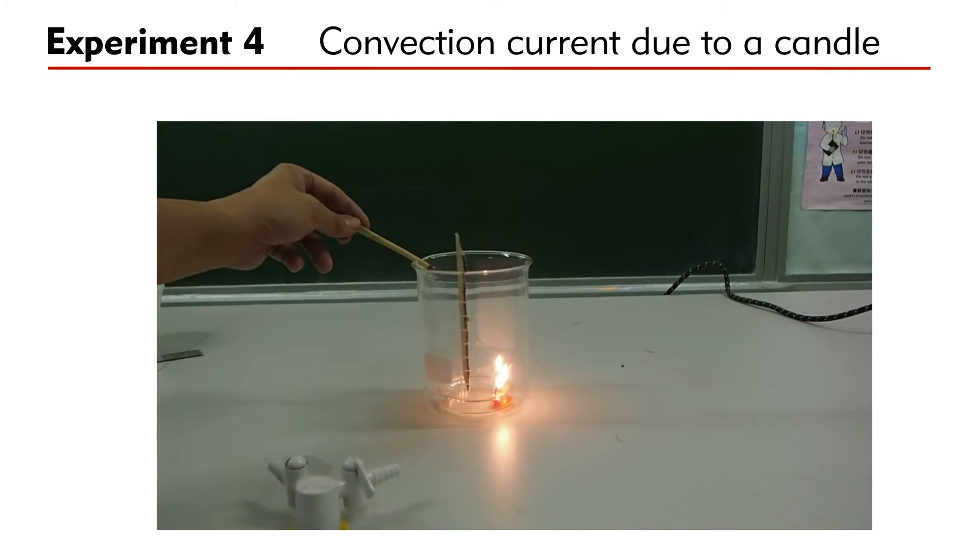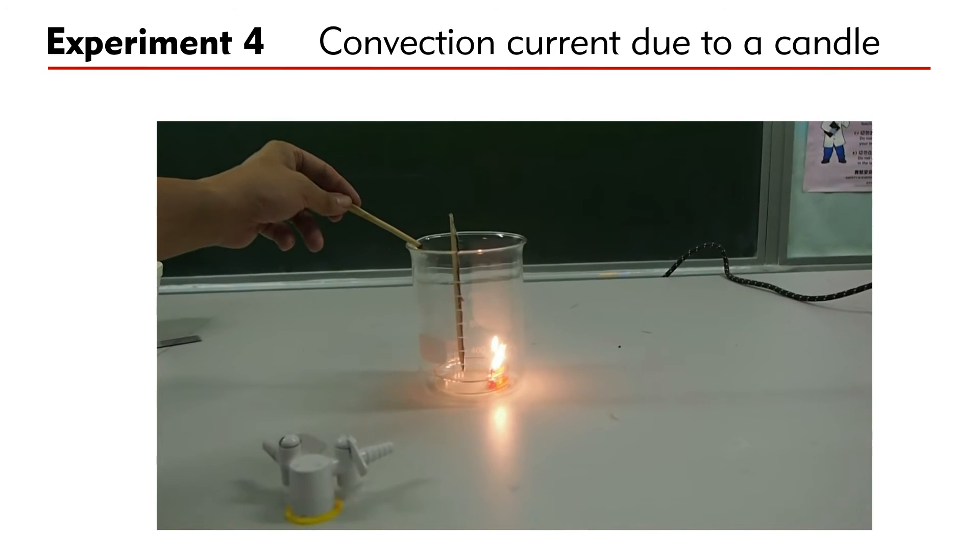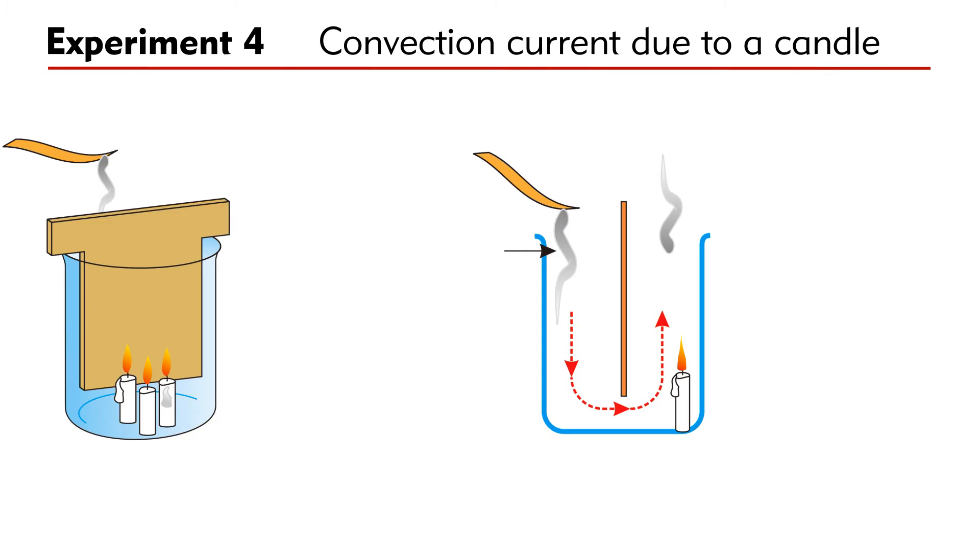You can see that the smoke goes down. Let's explain this. The burning candle heats up the air above. As the hot air rises, air in the next chamber flows in to fill the space. As a result, air moves down in one chamber and rises in the other. As smoke moves with air, it goes downward.